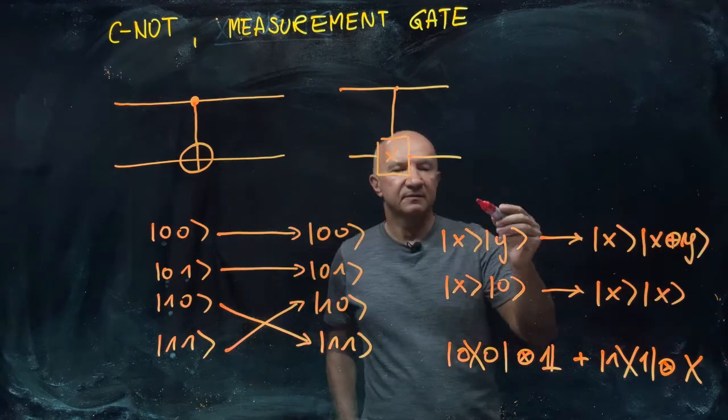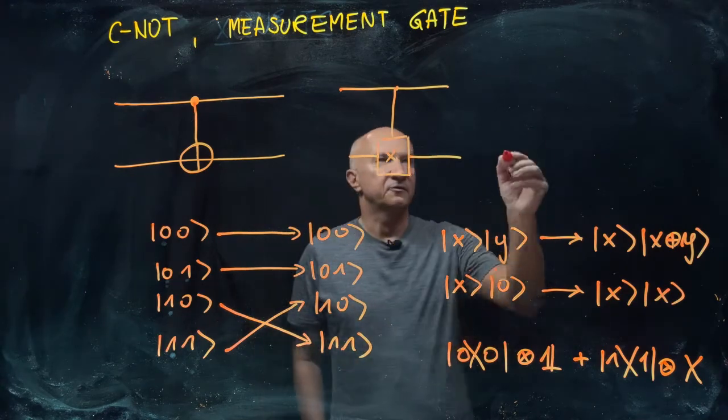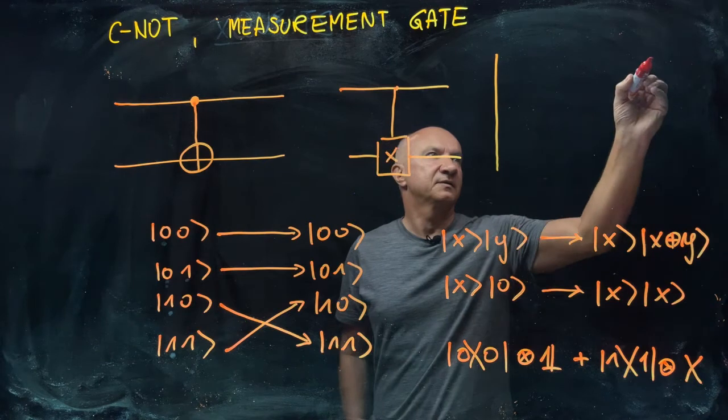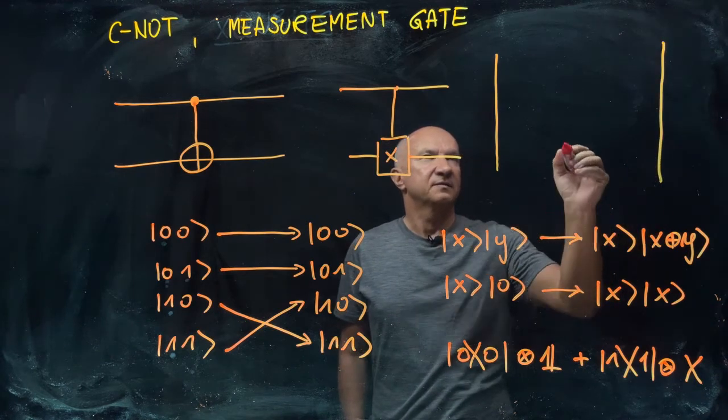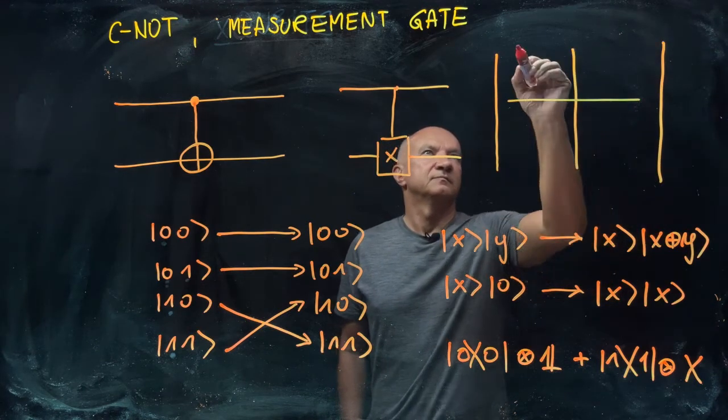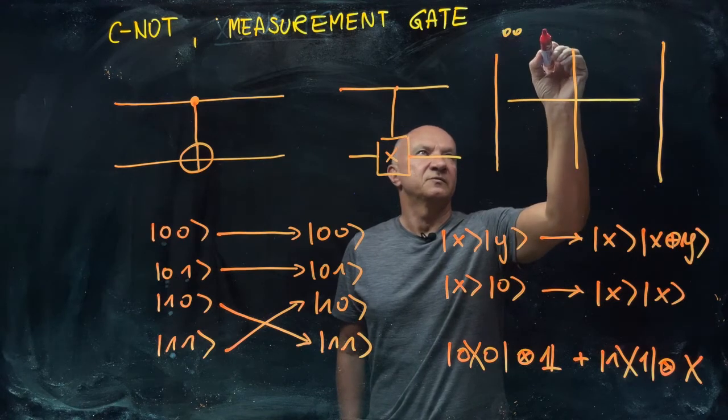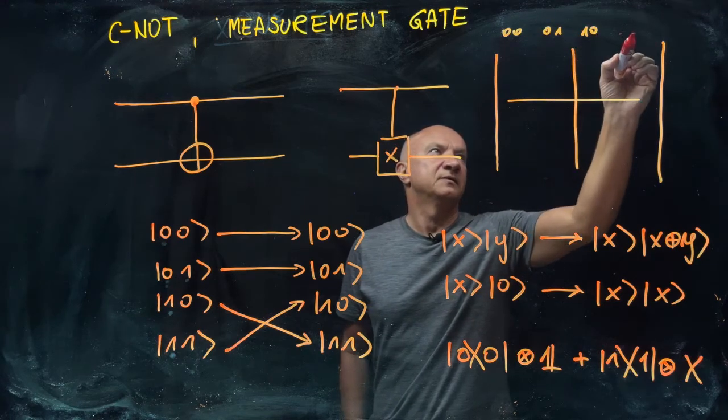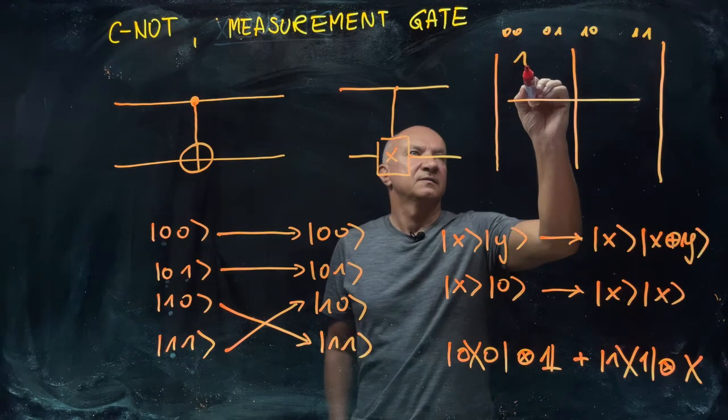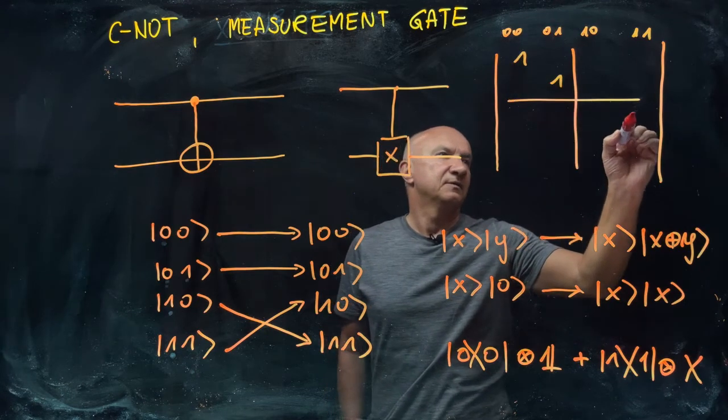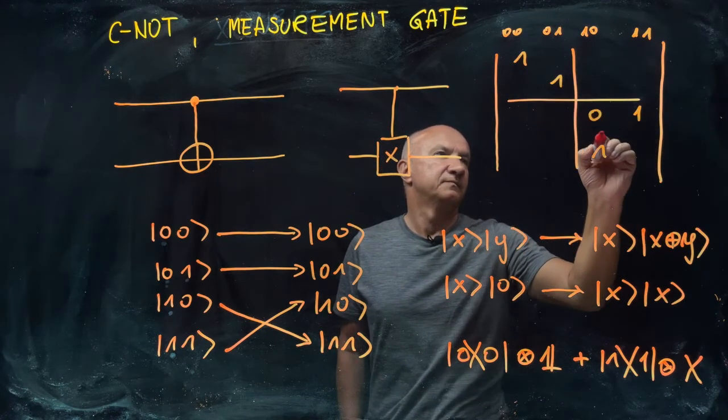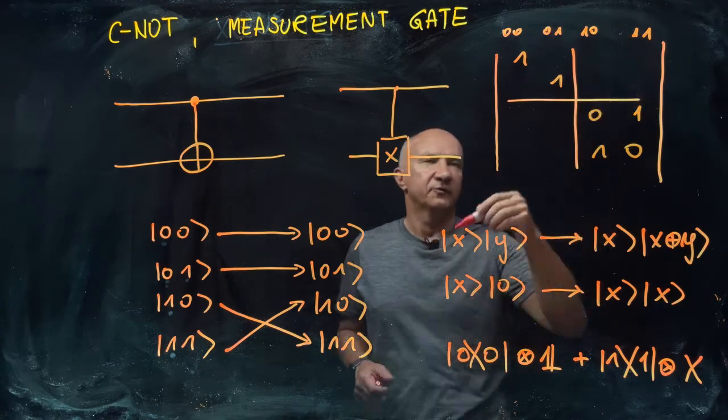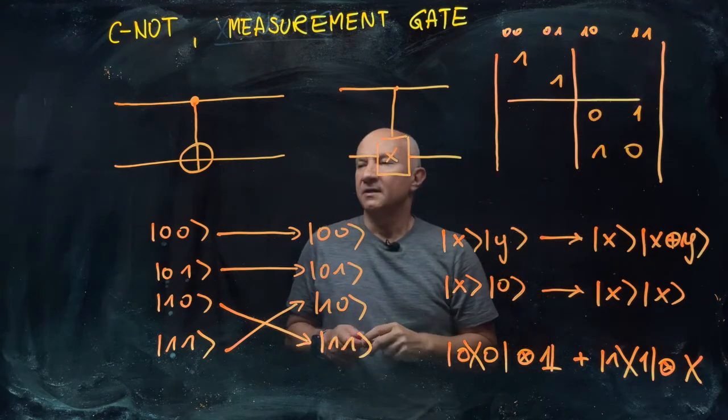And of course, if you really want, you can use this basis and write it as a matrix as well. In this case, if those are states |00⟩, |01⟩, |10⟩, and |11⟩, this matrix will look like this, with zeros on the off diagonals.